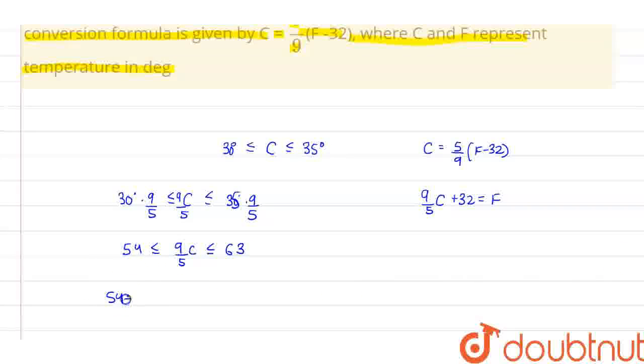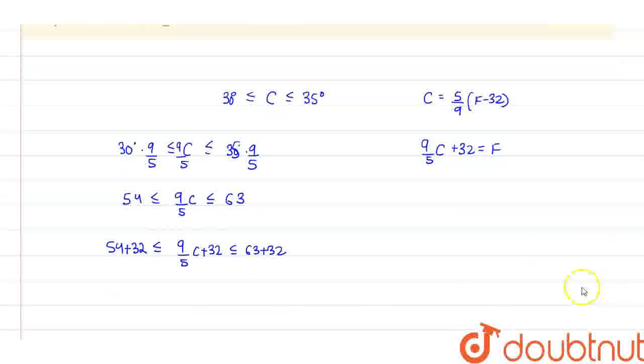So from here we get 86 less than equal to 9 by 5 C plus 32 less than equal to 95.